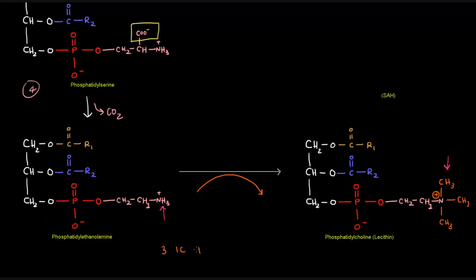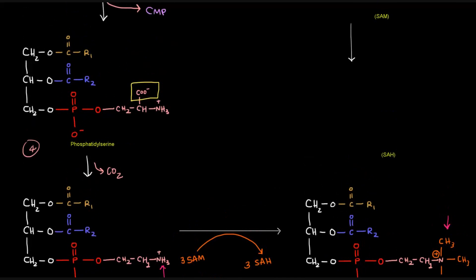Three one-carbon transfers. And we're going to add three methyl groups from a specific donor. That donor molecule is SAM. So, we're going to have three molecules of SAM donate a methyl group each. And each of those methyl groups will be attached to that nitrogen from that amino group. And these SAMs will become SAHs.